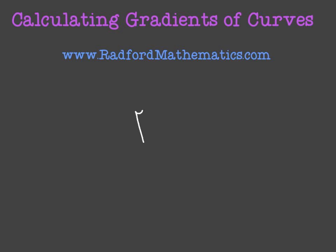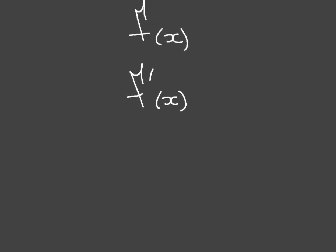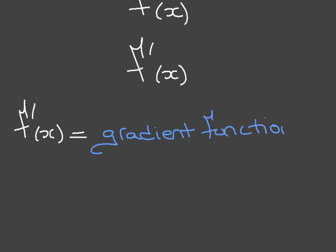When we're given a function f of x, for which we find the derivative function f dash of x, it's important to realize what we're actually doing here. The derivative function f dash of x can often be thought of as the gradient function. In fact, in my classes, I often define it this way: f dash of x is the gradient function of the curve y is equal to f of x.